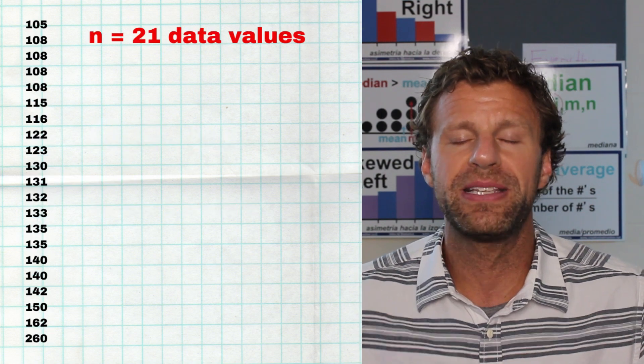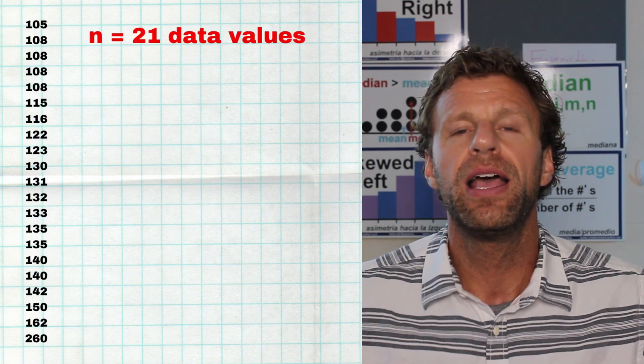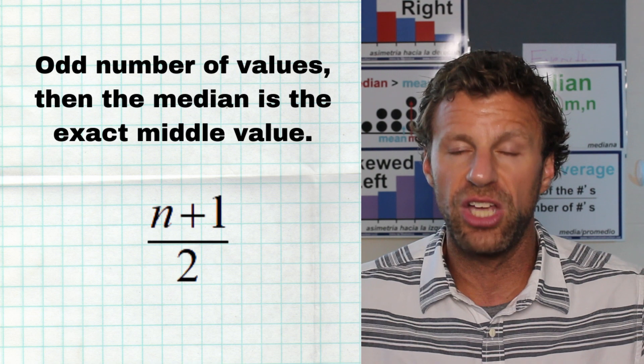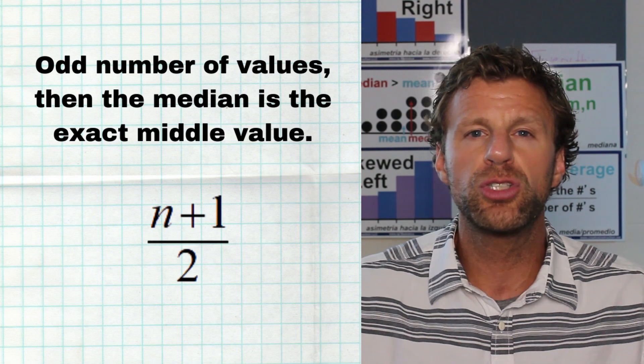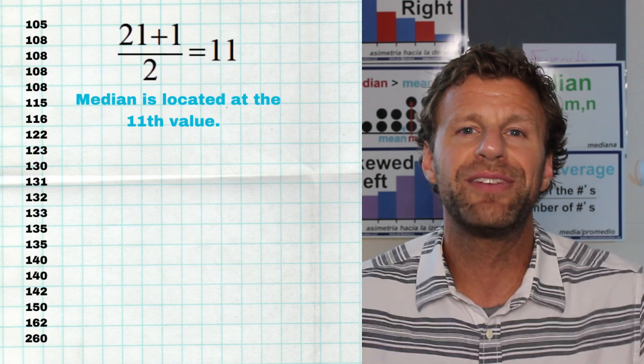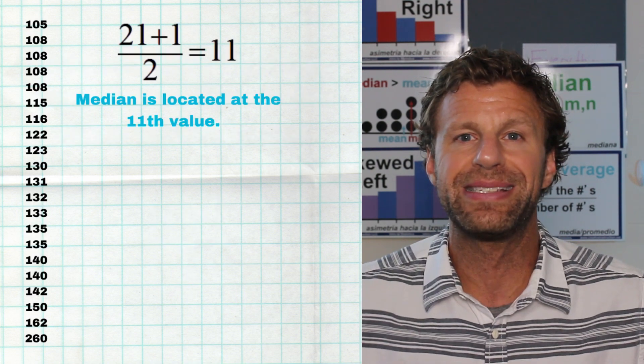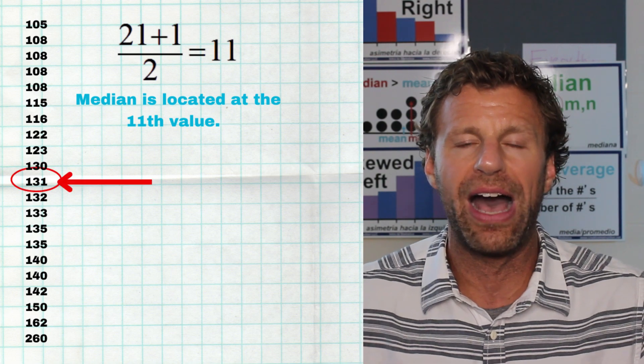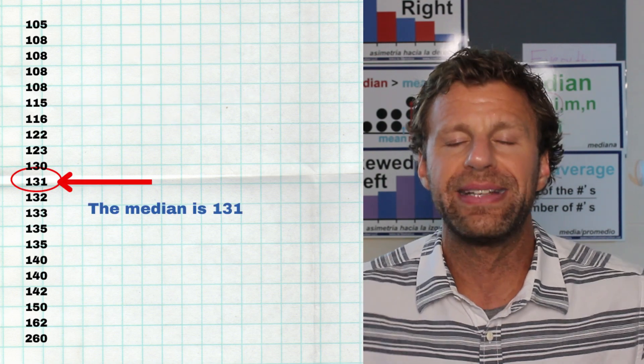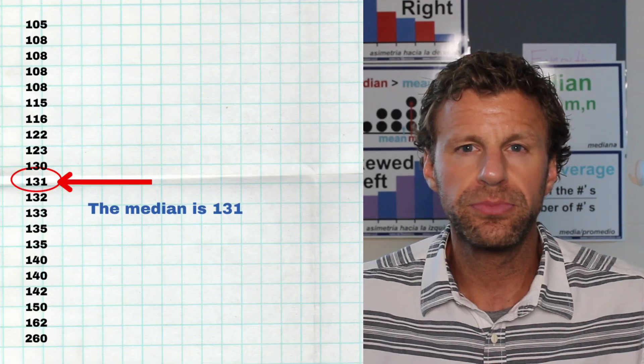If you have 21 pieces of data in your data set, then following the formula to find the location of the median: 21 plus one is 22, divided by two is 11. That means the median is the 11th value in your data set when the data is put into order. You can also use technology — enter all your data into a website or calculator to easily get the median — but understanding that the median represents the middle of the data is super important.